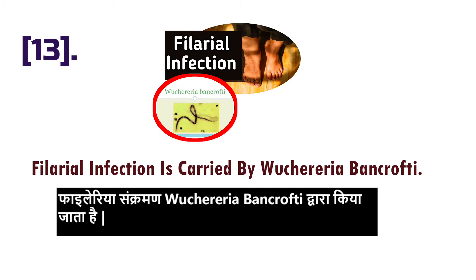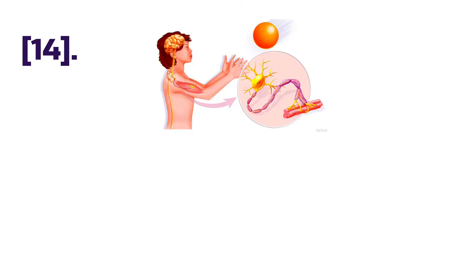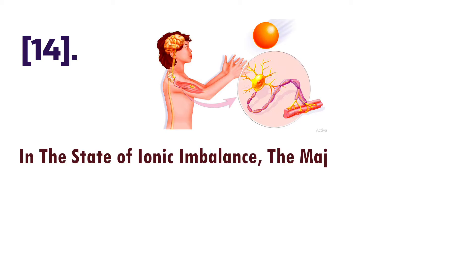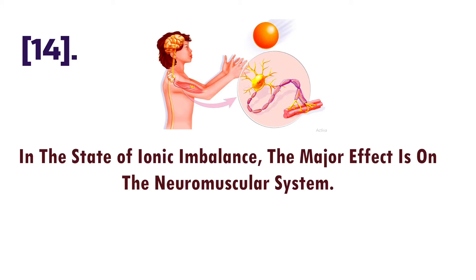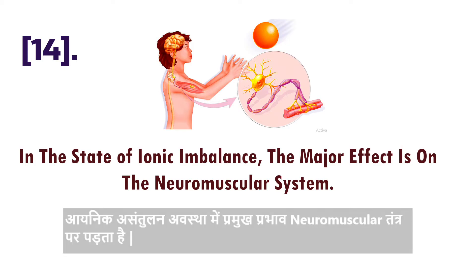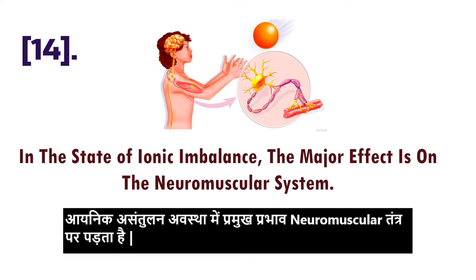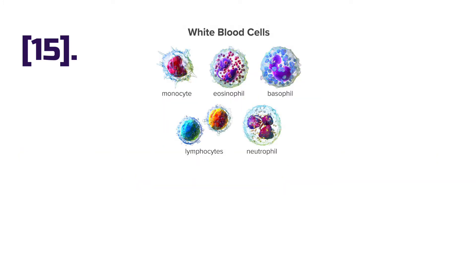Point number thirteen: filarial infection is carried by Wuchereria bancrofti. Point number fourteen: in the state of ionic imbalance, the major effect is on the neuromuscular system.